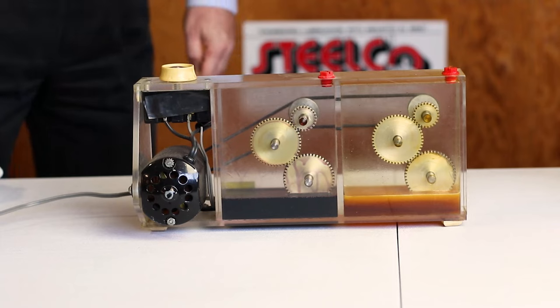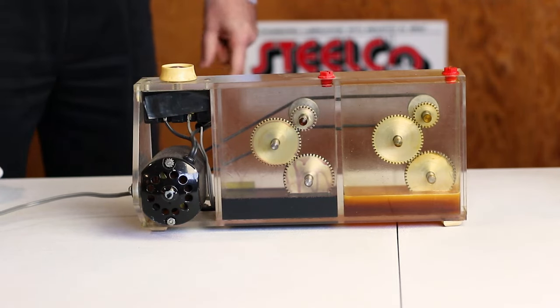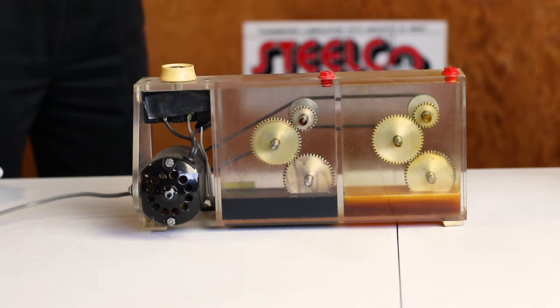There are a few ways that gearboxes leak. One is it's overfilled where they fill it past the seals. Then it'll leak out and seek its own level.